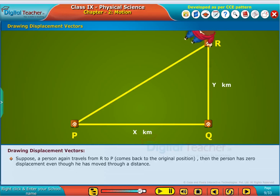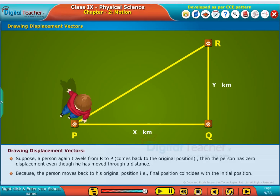Suppose, a person again travels from R to P, comes back to the original position. Then the person has zero displacement even though he was moved through a distance. Because, the person moves back to his original position, that is final position coincides with the initial position.